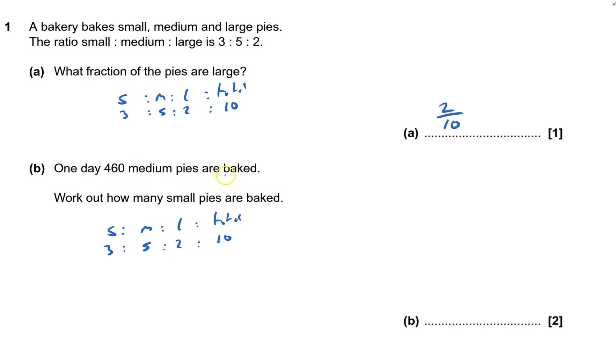One day, 460 medium pies are baked. So I'm putting 460 down in the middle column for the medium. And I've got to work out how many are small, I've got to work out what number goes here.